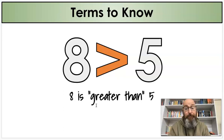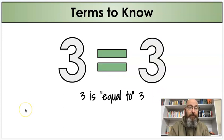Eight is greater than five. Another sentence, because eight is bigger than five. And of course, three is equal to three.